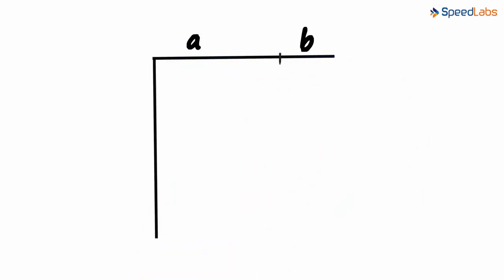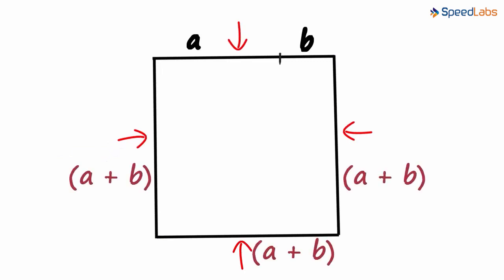Next, we complete the square with a plus b as its side. This is a square in which each length is a plus b.